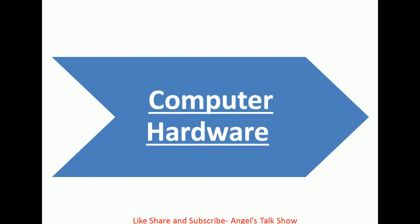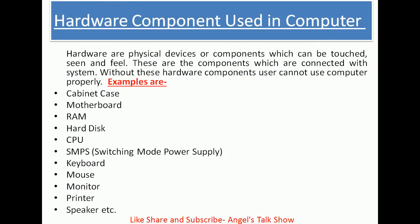Firstly, we will cover computer hardware. Computer hardware are physical devices or components which can be touched, seen, and felt. These are the components which are connected with the computer system. Without these hardware components, the user cannot use the computer properly.